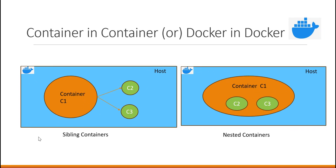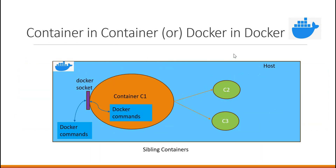In the second method, we have the main container and the Docker builds within this container will create other containers within the same container — meaning these containers are nested inside the main container. In this video, we are going to see method one for creating sibling containers. This is our approach: we have this host machine, and assume we don't have any containers on it yet.